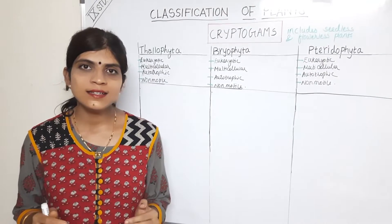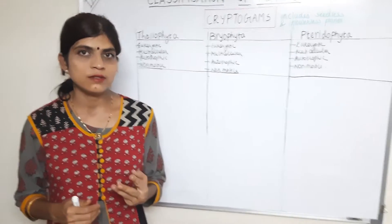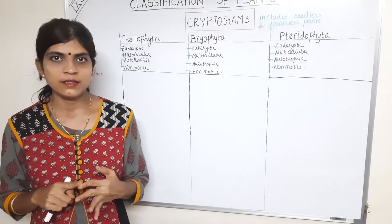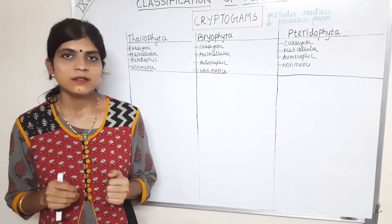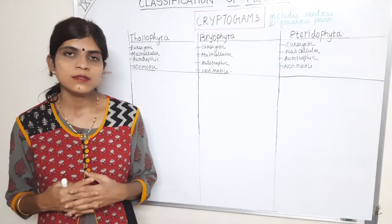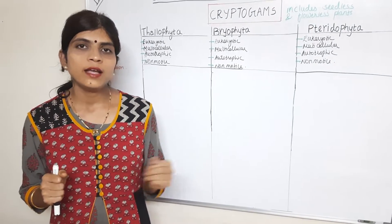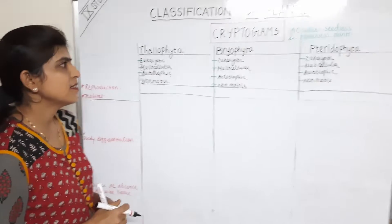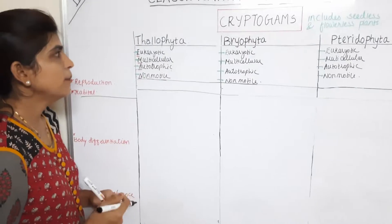Cryptogams, which include seedless and flowerless plants, are further classified into three divisions: Thallophyta, Bryophyta, and Pteridophyta. We are now going to do a comparative study. Whenever we are studying many divisions or many kingdoms, it is always advised to study comparatively. So we have plotted columns here to understand these three divisions.